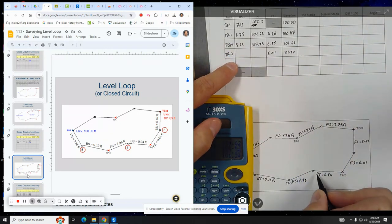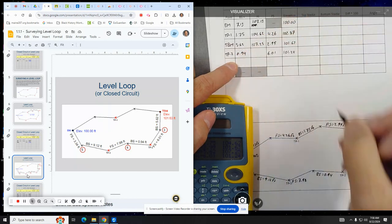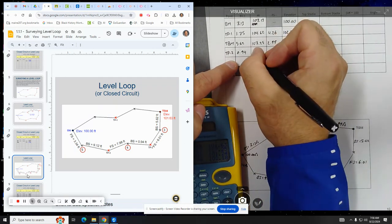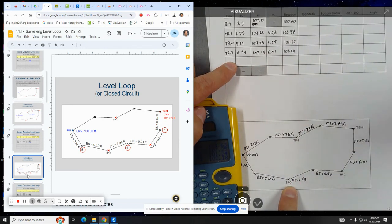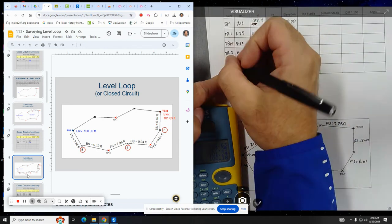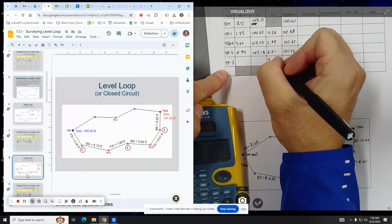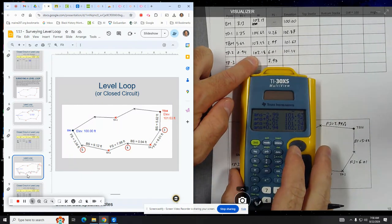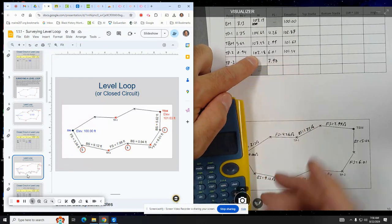And then the back sight from the instrument back to TP2 is 0.94. So we add 0.94, so plus 0.94. We have 102.18. And then our foresight looking to TP3 is 7.98. So we would then take 102.18 and subtract 7.98. We get 94.20.